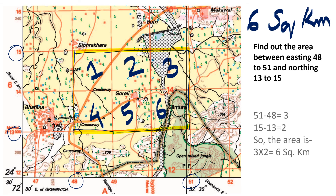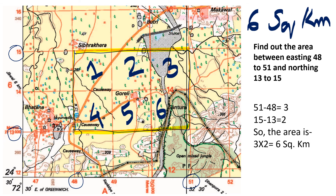Let's look at this more easily using the formula. 51 minus 48 equals 3, and 15 minus 13 equals 2. So 3 times 2 equals 6 square kilometers. It's really easy to find out area in toposheet.